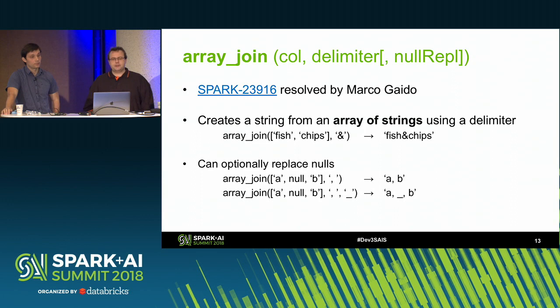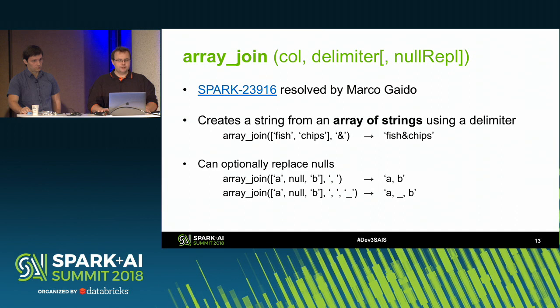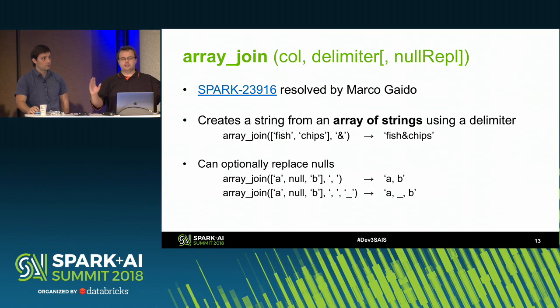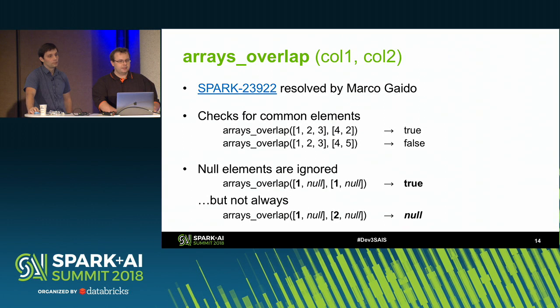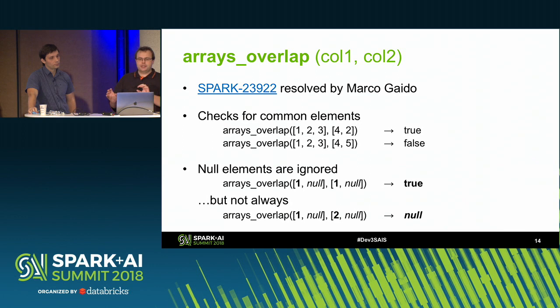The next function is array_join — equivalent to mkString in Scala. At the moment it only supports arrays of strings. You provide a delimiter and it generates a string with delimiters between elements. For example, you could reconstruct a sentence from tokens — the inverse of the split function. There's also an optional parameter to specify a replacement string for null values. Arrays_overlap is an interesting one: it takes two arrays and determines whether at least one element is shared. For null handling: if there are matching elements, it returns true regardless of nulls; if there are no matching elements but matching nulls in both arrays, it returns null.